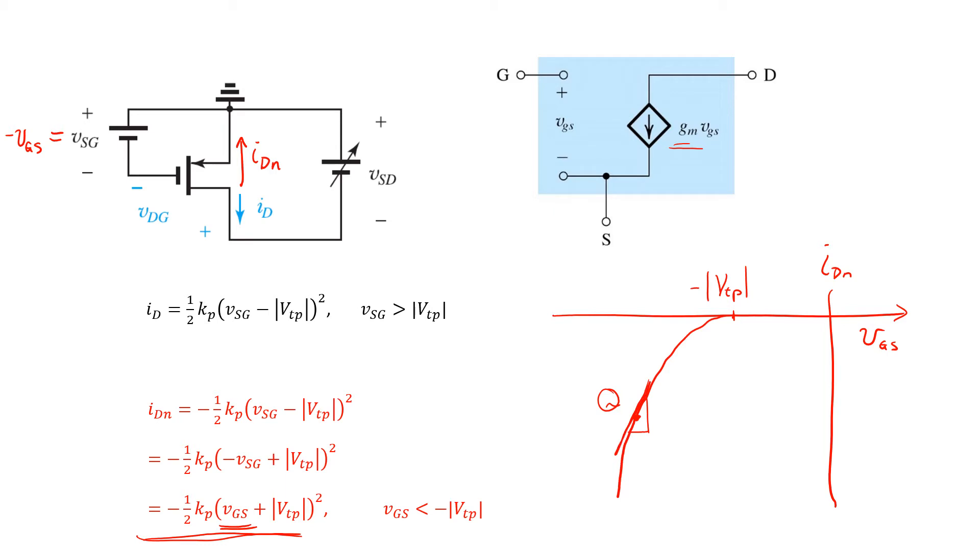So you can see here that the slope is still positive because, again, it's because of the double negative involved here. So there's no reversal in the polarity of gm, and we've still got a positive transconductance with respect to VGS and the PMOS transistor, and the same small signal model is applicable.